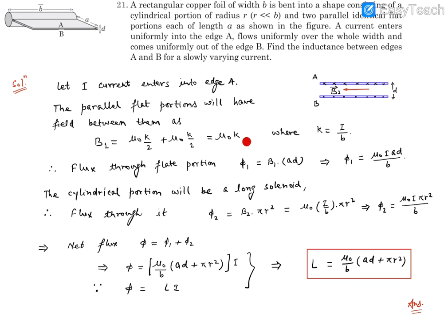Due to this, there will be flux passing through the area between these two flat portions. The flux through this flat portion is φ₁, which is B₁ times the area. The area is this thickness that we can see over here.